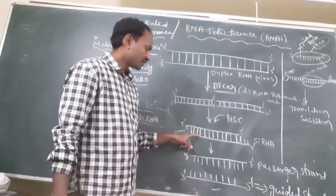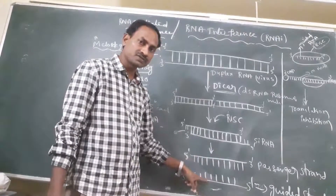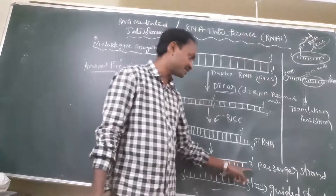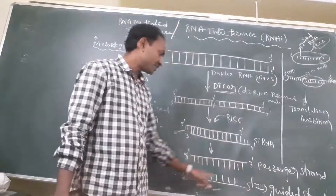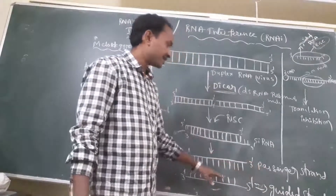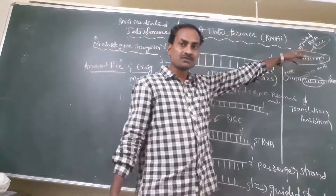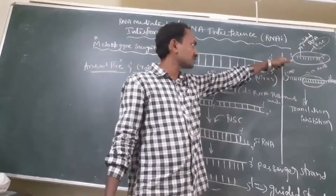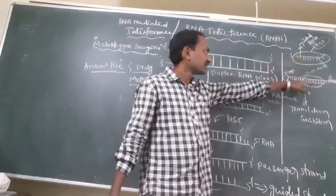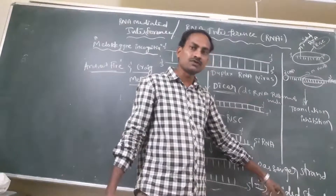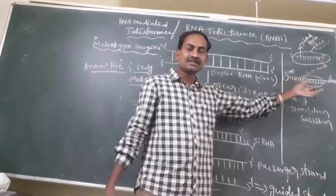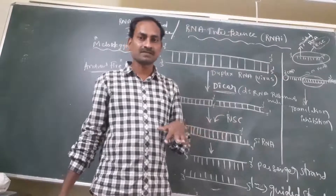This siRNA dissociates into single-stranded RNA molecules. The 5' to 3' strand is called the passenger strand, and the 3' to 5' strand is called the guide strand. The passenger strand is degraded, but the guide strand goes and forms a complex with the RISC complex — RNA-Induced Silencing Complex, a group of proteins. After forming the complex, this guide RNA strand binds to the complementary sequence present in the target mRNA. This is how it inhibits the translation mechanism and protein expression.